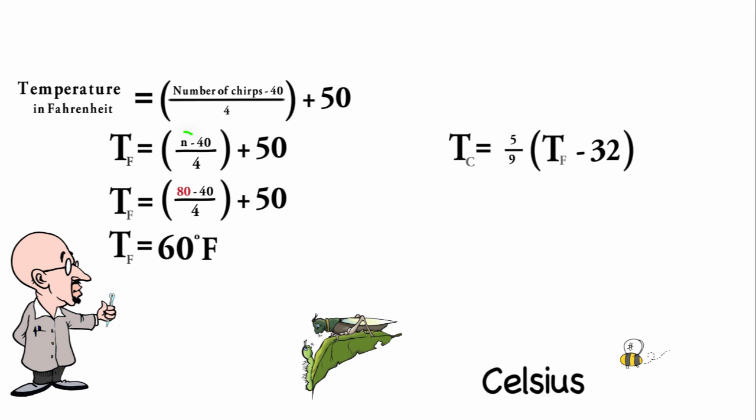Just as before when we replaced the N with 80 once we knew how many cricket chirps there were, we can replace the variable T in Fahrenheit with N minus 40 divided by 4 plus 50.